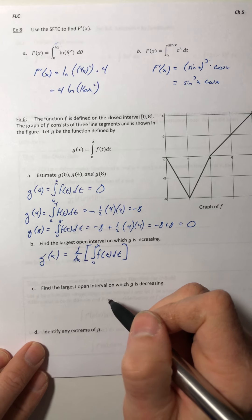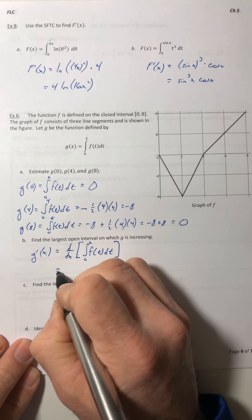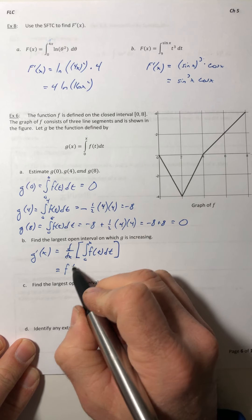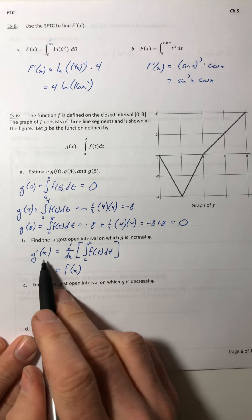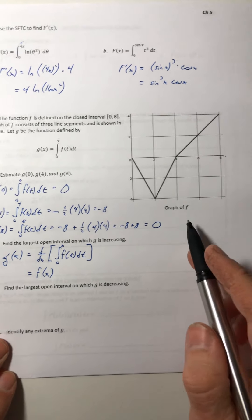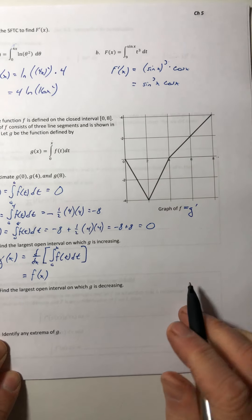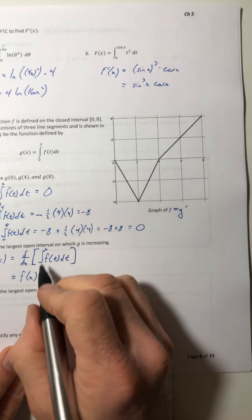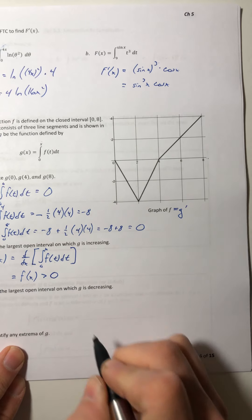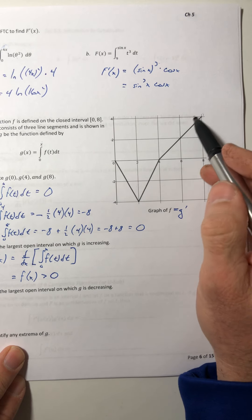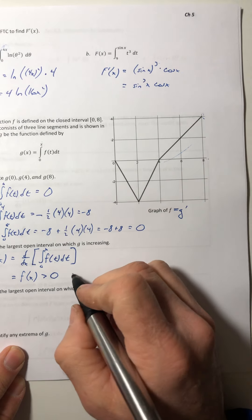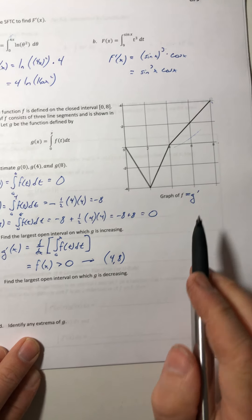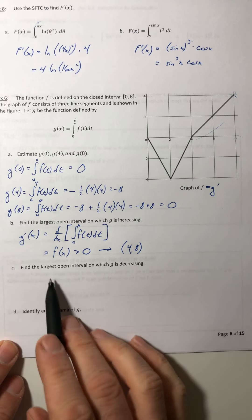Well, we get to use it even though I didn't tell you to. So if you did the derivative of this, that's just going to be f(x). Just plug the x in for the t. So the derivative of g is f. So with this graph right here, that's really the graph of the derivative of g. So if I want where g is increasing, I want where its derivative is positive. So it's positive up here, from 4 to 8.